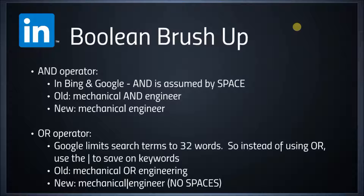In Bing and Google when doing an x-ray search, the word AND is assumed by the spacebar. The old method was to type mechanical AND engineer, but the new method is to simply type mechanical space engineer. This is really beneficial especially in Google, which has a search term limit of 32 words. The method will automatically assume you're searching for mechanical AND engineer, and both keywords will return in your results.